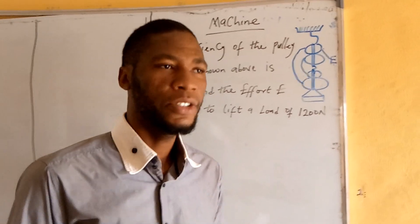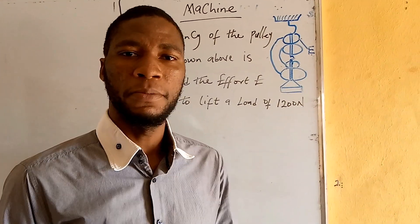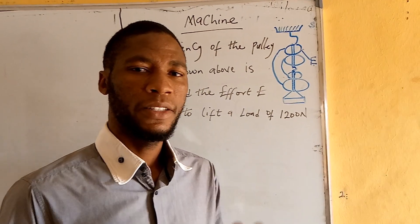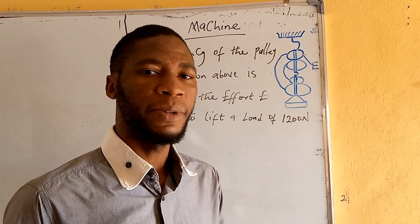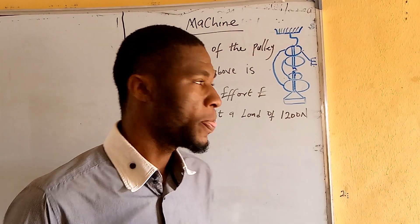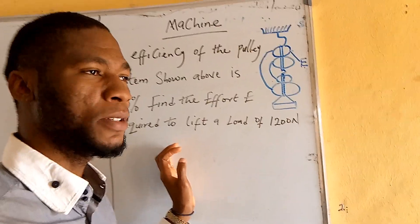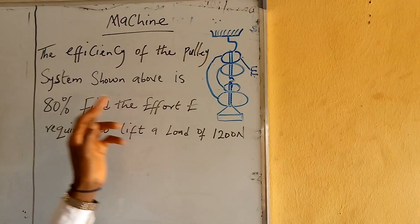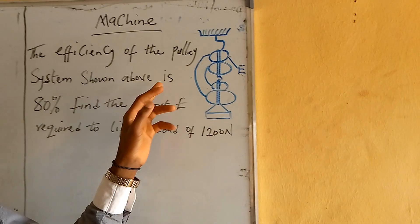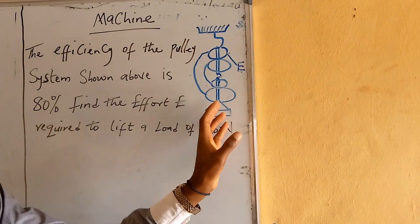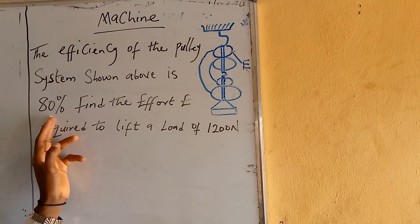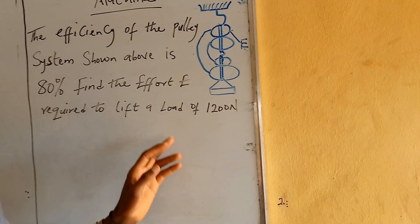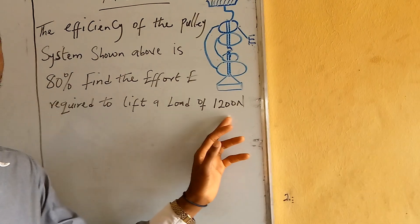Today in our calculation in physics, we are going to be dealing basically on machines. We are going to be solving some questions on machines. This is our first equation: the efficiency of a pulley system shown above is 80%. Find the effort E required to lift a load of 1,200 Newton.